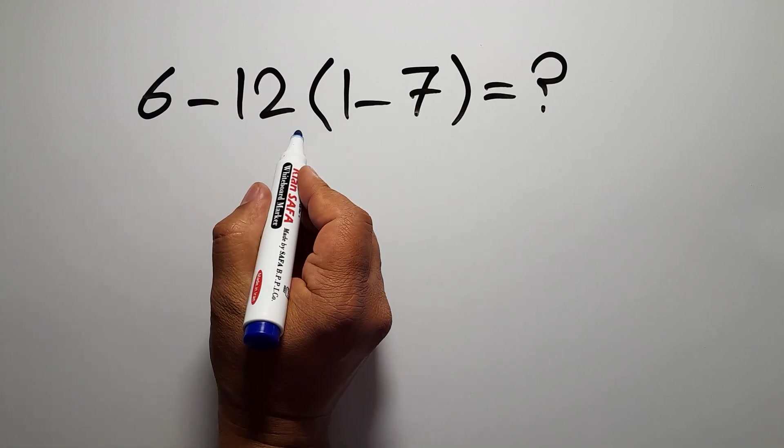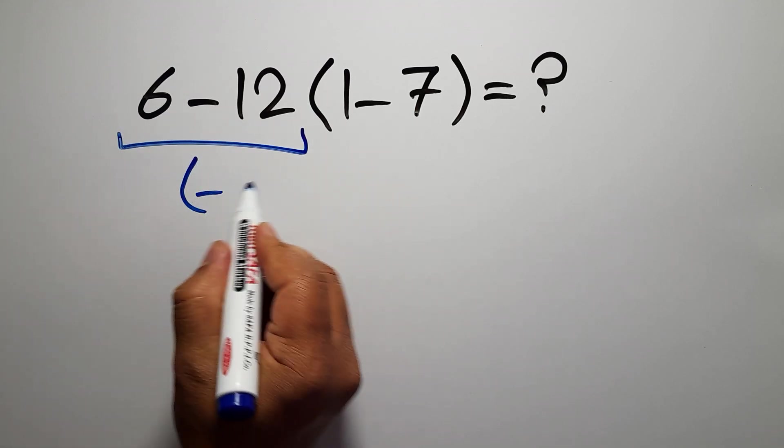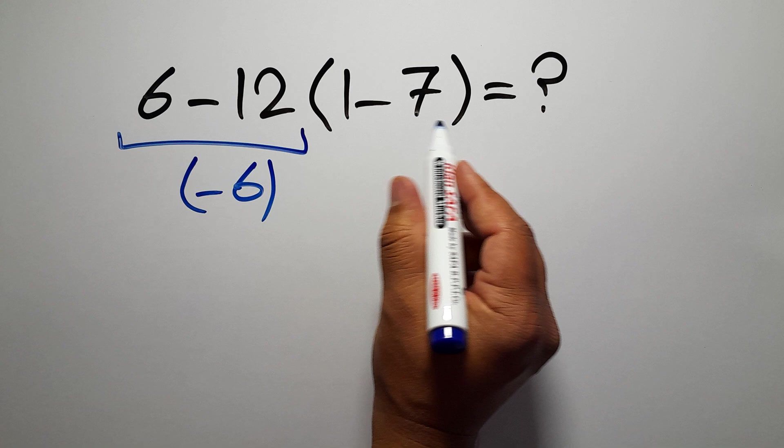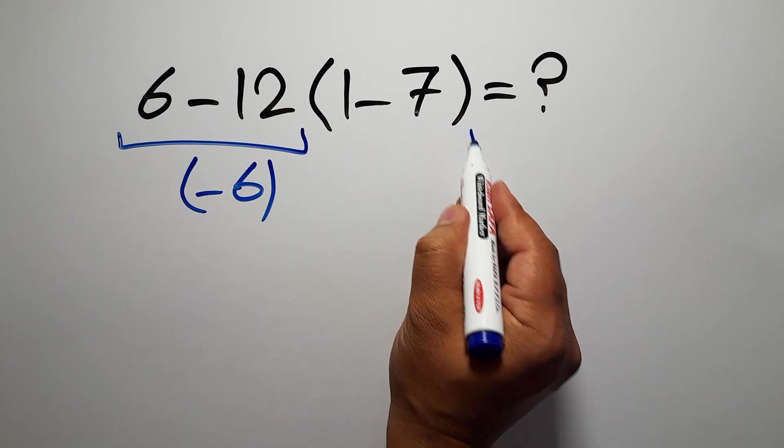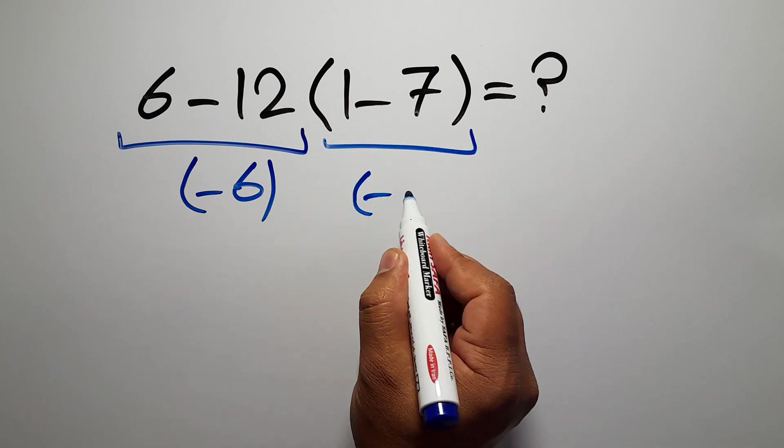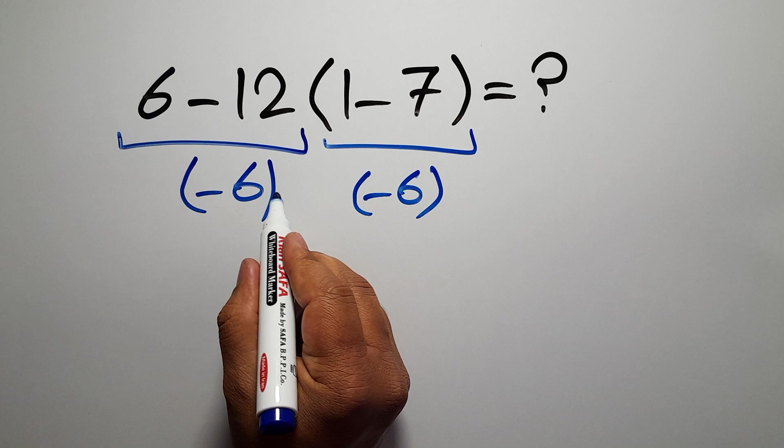6 minus 12 is just negative 6, and here we have 1 minus 7 which equals negative 6, so negative 6 times negative 6.